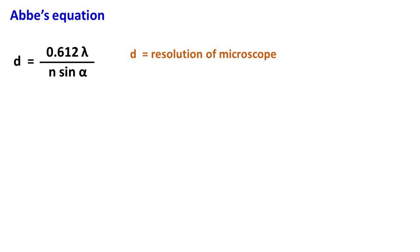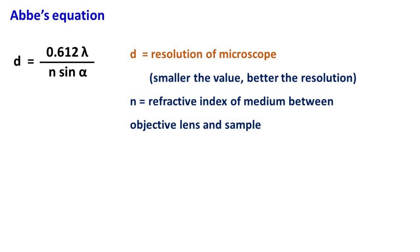The equation is d equals 0.612 lambda divided by n sin alpha. Here d is the resolution of microscope. Smaller the value of d, better is the resolution. Lambda is the wavelength of light and n is the refractive index of the medium between the objective lens and the sample. Alpha is the aperture angle.